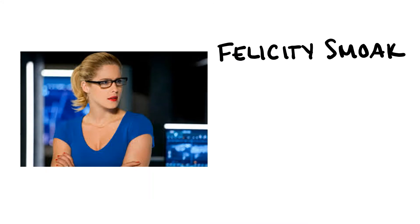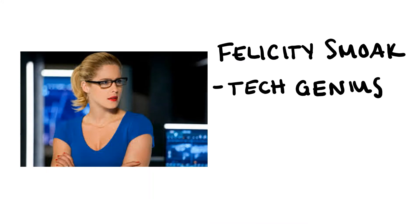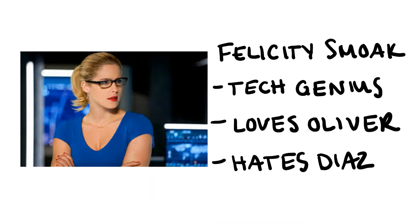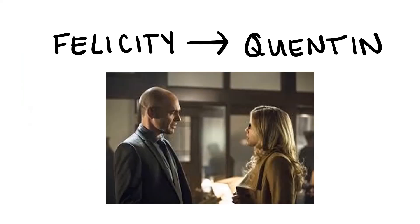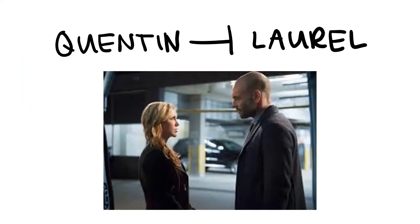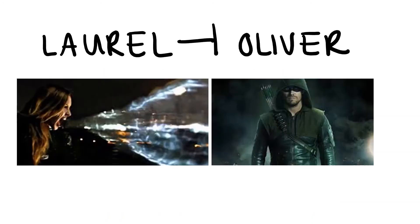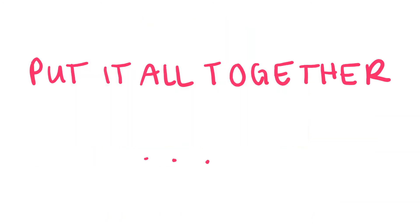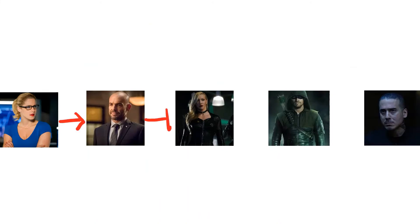This is where the lovely Felicity Smoak comes into play. Not only is she a tech genius, but she's in love with Oliver and consequently hates Diaz. Because of this, Felicity promotes Quentin to stop Laurel. So we have Quentin inhibiting Laurel, Laurel inhibiting Oliver, and Oliver inhibiting Diaz. If we put this all together, we have a diagram of our five characters.